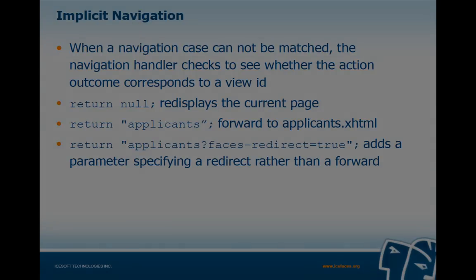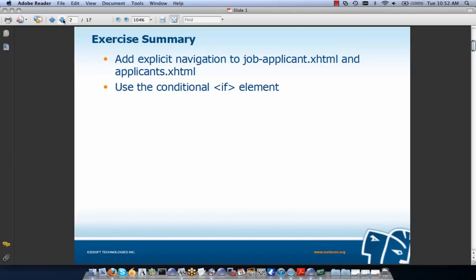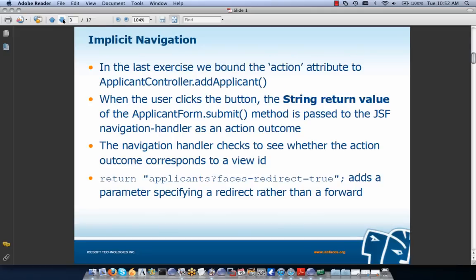That concludes our lecture on JSF Navigation. Our next exercise is on JSF navigation. We're going to add explicit navigation to jobapplicant.xhtml and to applicants.xhtml, and also use the conditional if element in our navigation rules. In the last exercise we used implicit navigation — we bound the action attribute to applicantController.addApplicant, and the string return value was passed to the JSF navigation handler as an action outcome.